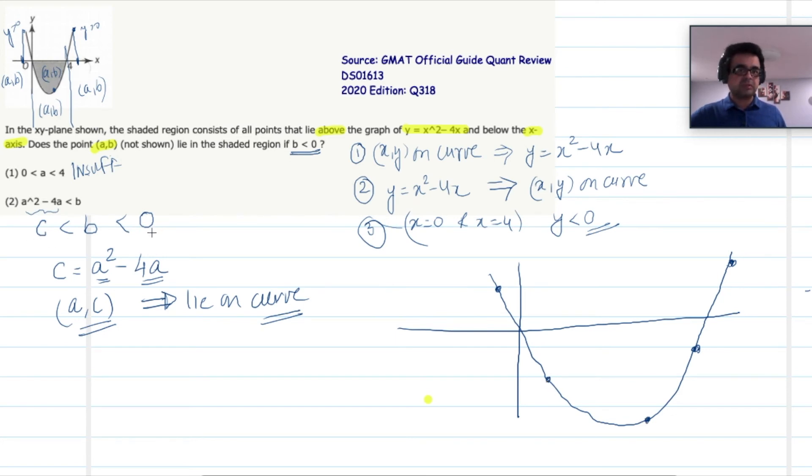Now, c is less than 0 is what I am given. So that means that these possibilities are not true. It has to be somewhere here. So c could be here, here, here.